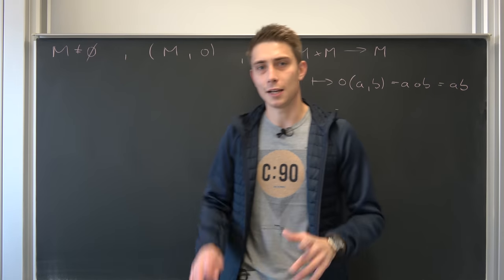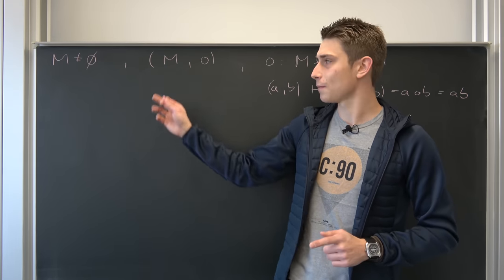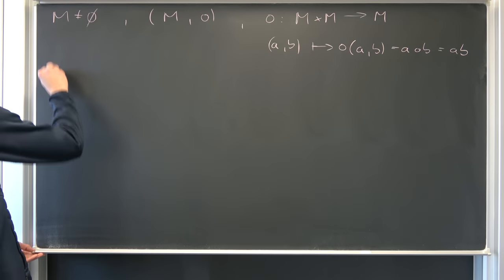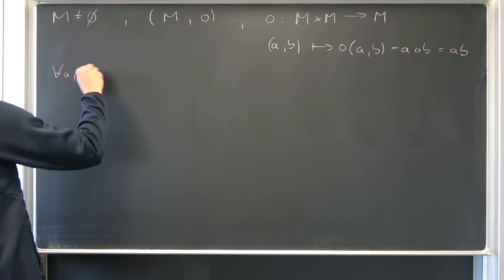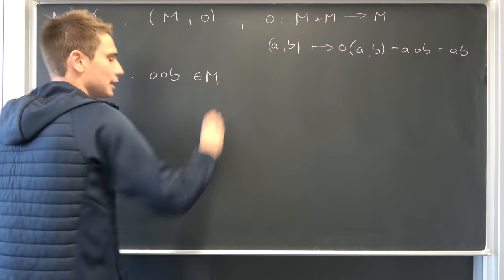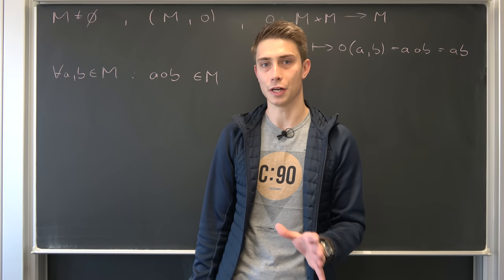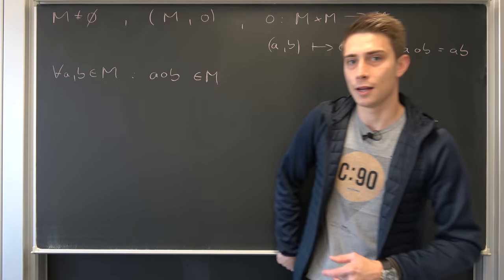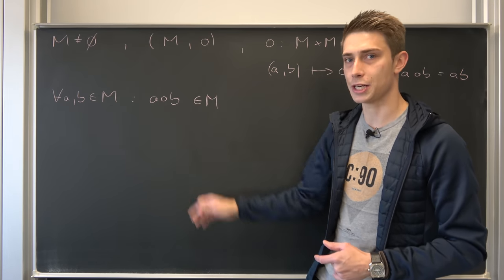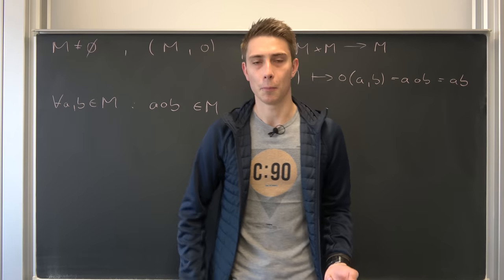Now what is a magma? Well, we are going to call this pair a magma. This exact pair. So this set and this binary operation is exactly a magma if and only if for all a and b out of this M we have that a in composition with b is once again element of M. This is what we call closure under this operation. So if M the set is closed under the operation then we are going to refer to this as a magma. The simplest algebraic structure you could possibly think about.